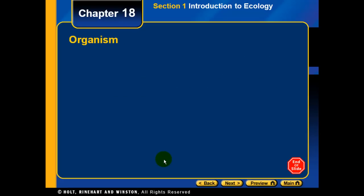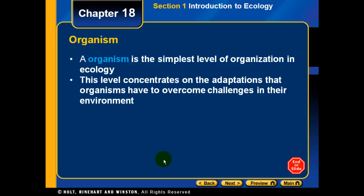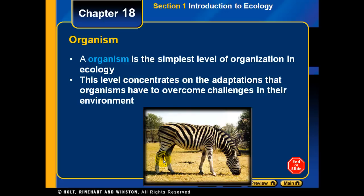The first level is the organism — the simplest level of organization in ecology. This level concentrates on the adaptations that organisms have to overcome challenges in their environment. For example, a zebra would be an organism.